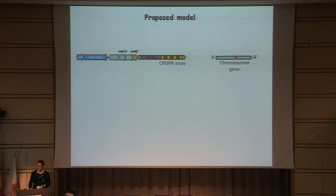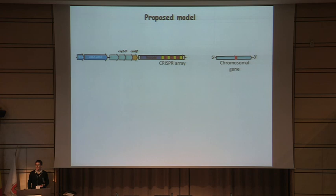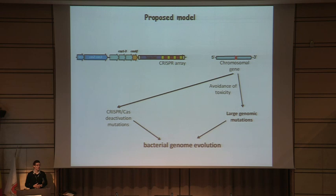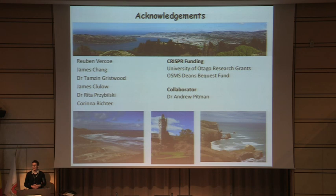The overall proposed model is: chromosomal genes are occasionally sampled and placed into CRISPR arrays, which then leads to a toxic DNA damage effect within the cell. Cells can escape either by mutating aspects of the CRISPR-Cas machinery or by acquiring larger scale genomic changes such as deletions that include the target site. Together, we think this represents an underappreciated role for how CRISPR-Cas systems could be driving bacterial genome evolution. I'd like to thank members of my lab and our funding bodies involved in this project.